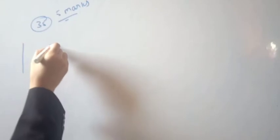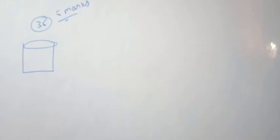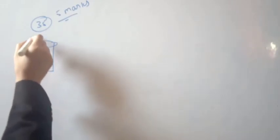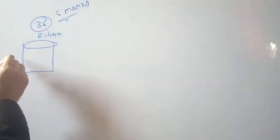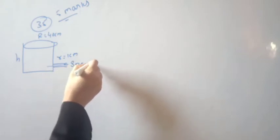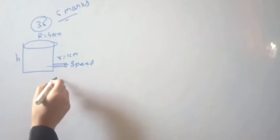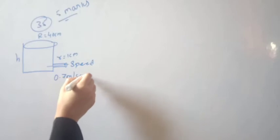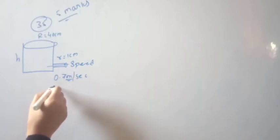Let's start the solution. Question number 35 is a five-mark question under Section 5. Here we have a cylindrical tank — this is the cylindrical tank — and the diameter of the tank base is 40 centimeter. The diameter of the pipe is 2 centimeter, so the radius of the pipe is 1 centimeter. We need to find how much the water level in the tank will increase in half an hour.